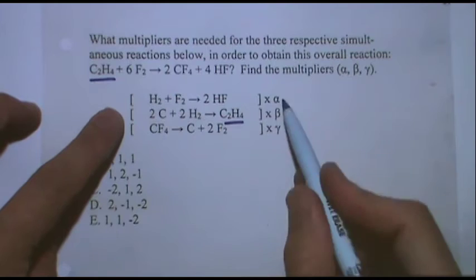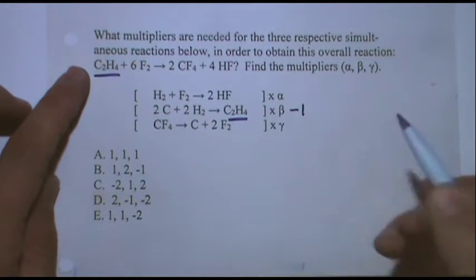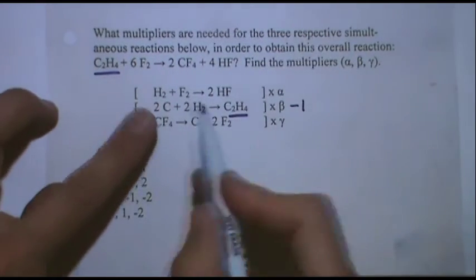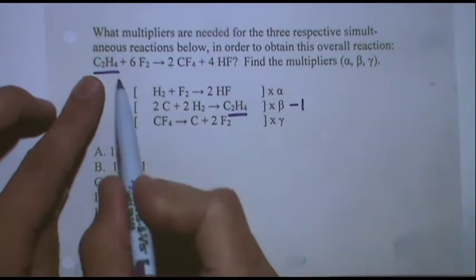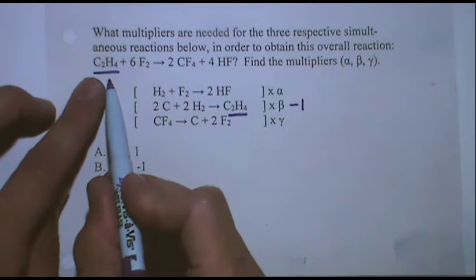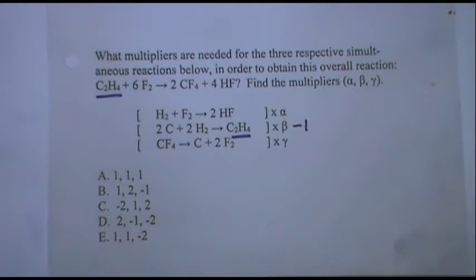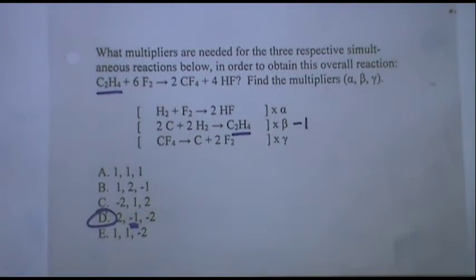I can only change these three. So what must beta be to make it look like the overall? Negative one. Negative one because I need to flip this reaction to look like this. This is in the reactants, this is in the products. I must have it in the reactants. So the minus one flips it. If you really trusted your work right now, what would you do next? It's the only one that has negative one as beta.